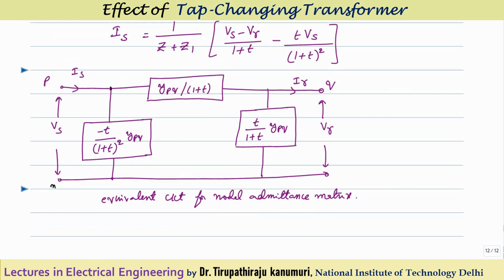Once the equivalent diagram is obtained, we form the admittance matrix as discussed previously. The shunt elements contribute to the diagonal terms YPP and YQQ only. For the off-diagonal terms YPQ and YQP, only the series element appears with a negative sign. These details were covered in the last class. I hope the effect of the tap changing transformer and how to draw the equivalent circuit for the admittance matrix is clear. If you have any queries, leave your comments below and I will answer them. Thank you very much.